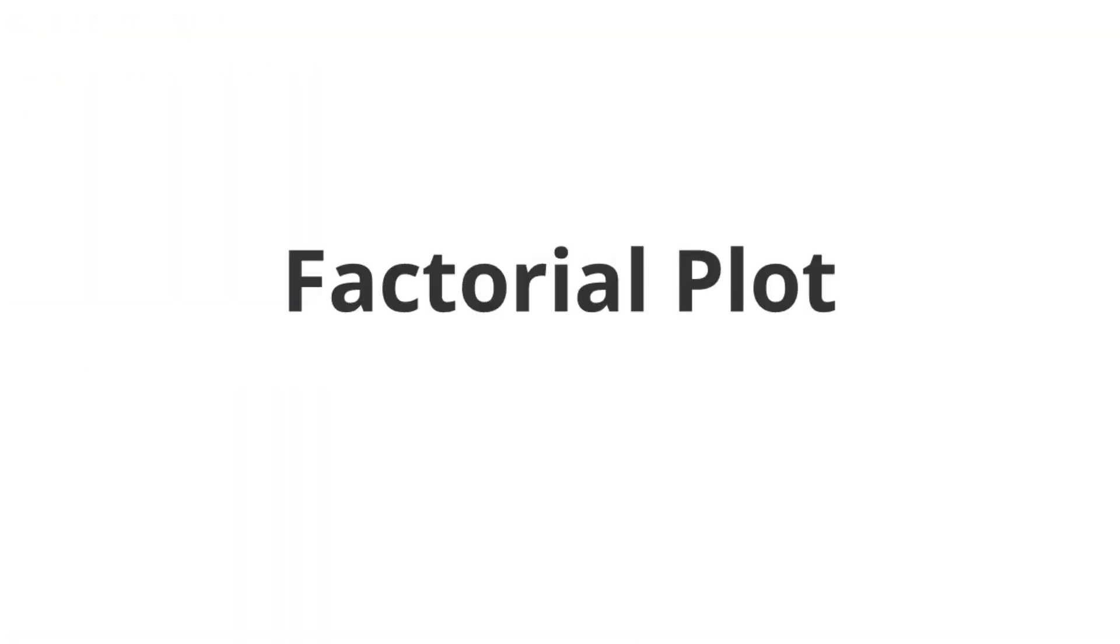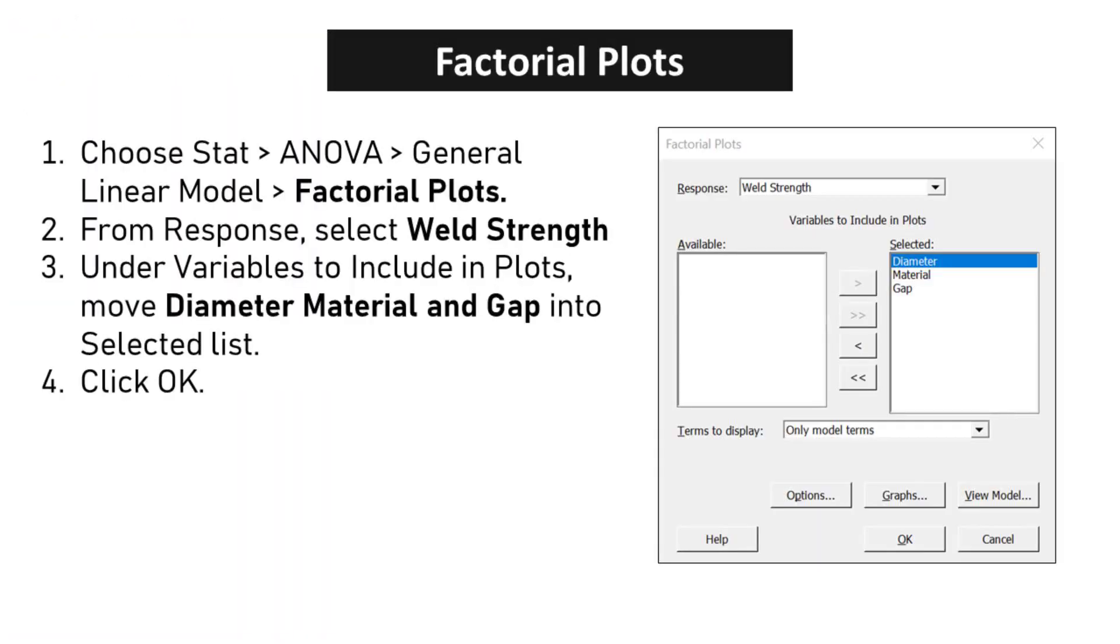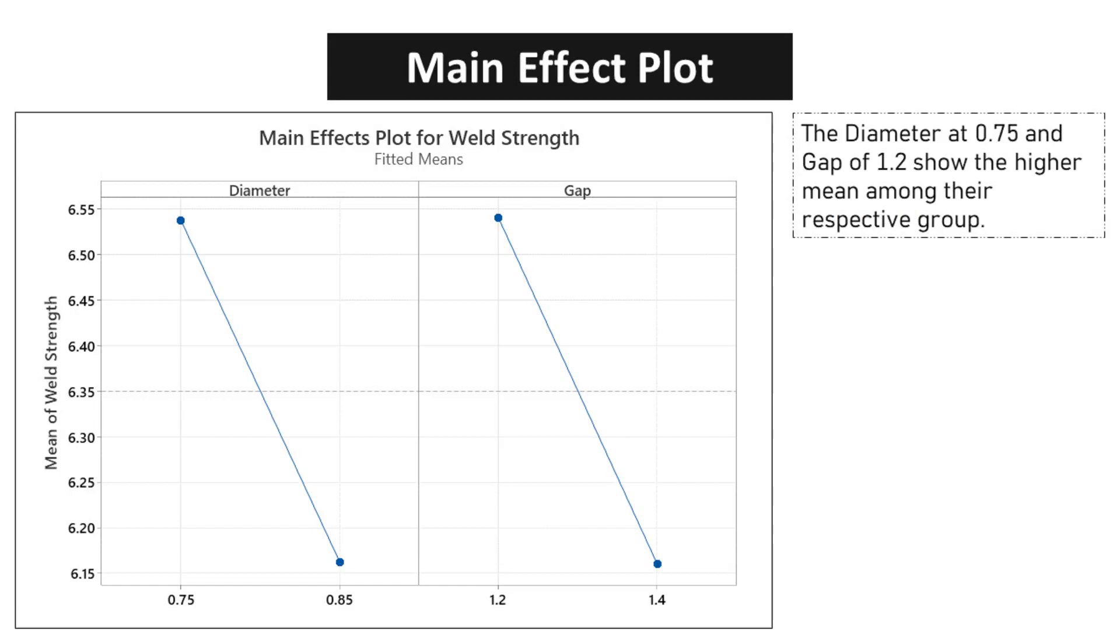Factorial Plot: Choose Stat, ANOVA, General Linear Model Factorial Plots. From Response, select Weld Strength. Under Variables to Include in Plots, move Diameter, Material and Gap into Selected List. Click OK. The Diameter at 0.75 and Gap of 1.2 show the higher mean among their respective groups.